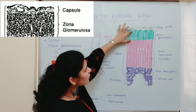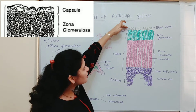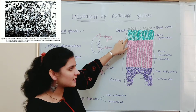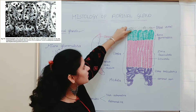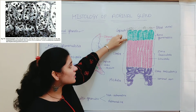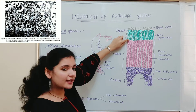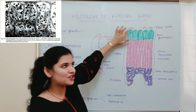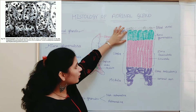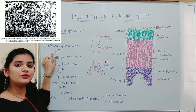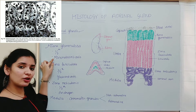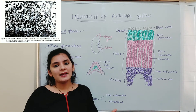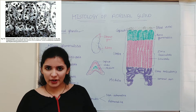Zona glomerulosa is the outermost layer of the cortex, present just below the capsule. It is made up of elongated or columnar cells with darkly staining nuclei situated at the basal part of the cell. These columnar cells are arranged in the form of an inverted U-shape or acinus group. Zona glomerulosa makes up about one-fifth of the cortex, and its function is the production of mineralocorticoid hormone, which balances water and minerals in the body.